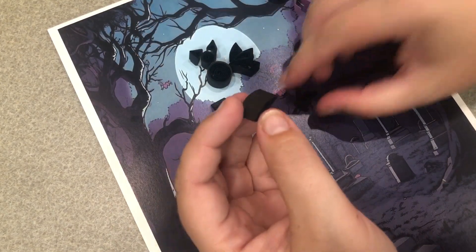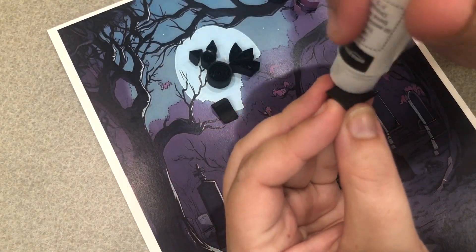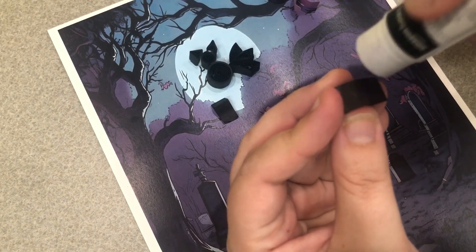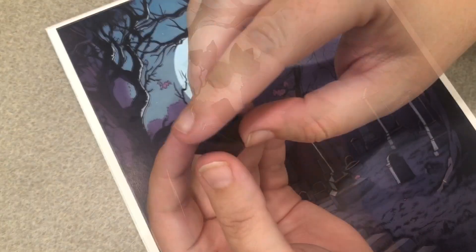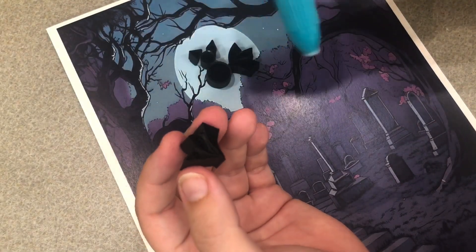And then we'll attach the three pieces of the other wing together. And then, again, we just add our glue.